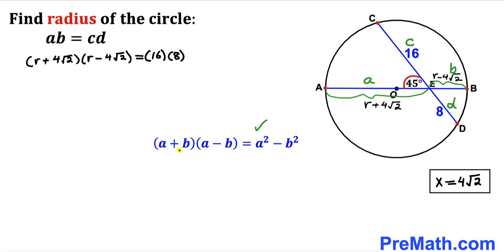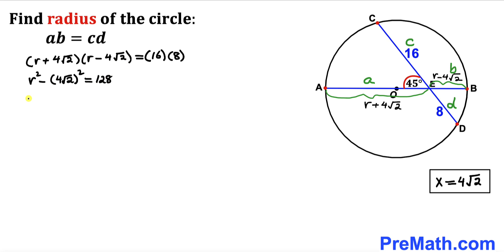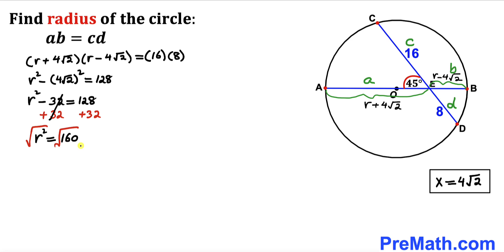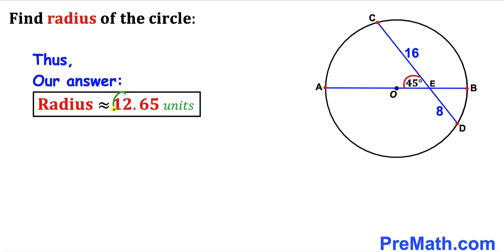Using the identity (A + B)(A − B) = A² − B², the left-hand side becomes r² minus (4√2)², which simplifies to r² − 32. The right-hand side is 16 times 8 = 128. So r² − 32 = 128, and adding 32 to both sides gives r² = 160. Taking the square root of both sides, our radius r turns out to be approximately 12.65 units.